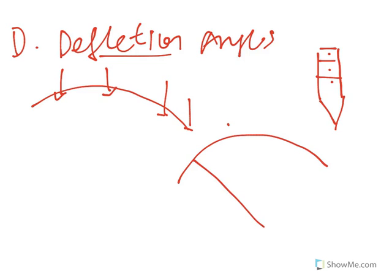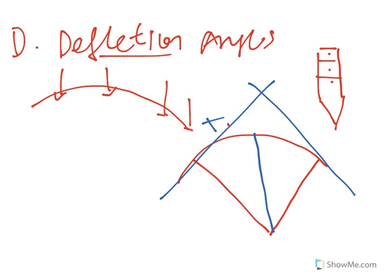This is the radius. This is a line. Here is B, C is the point of tangent.